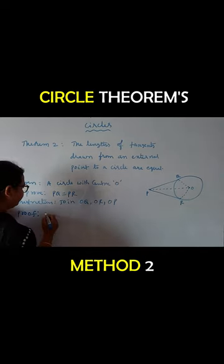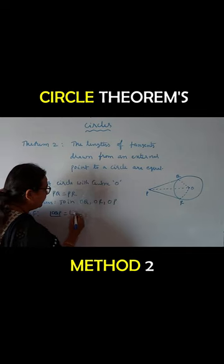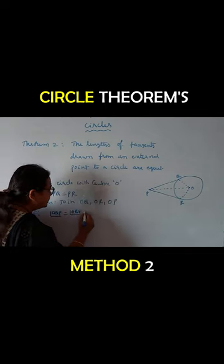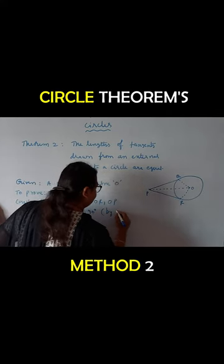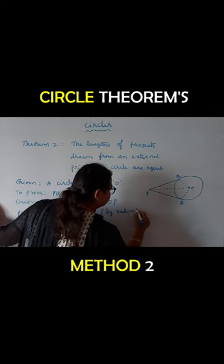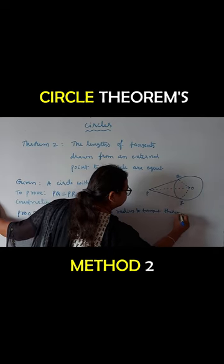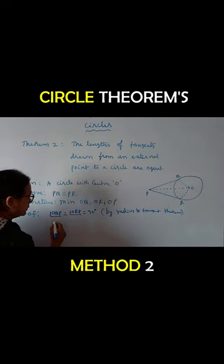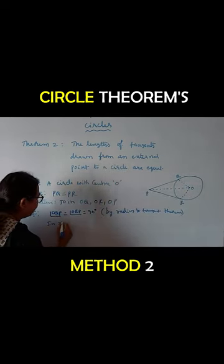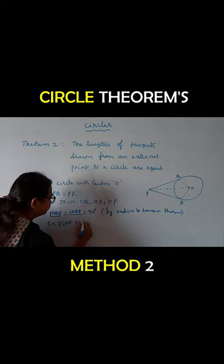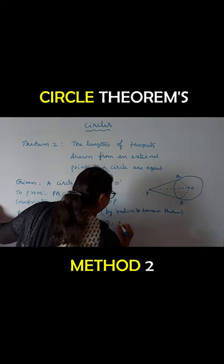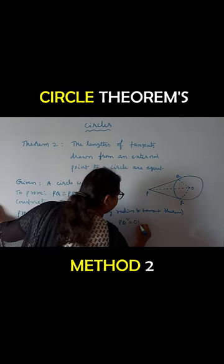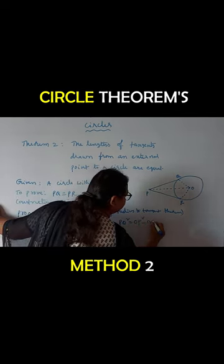Proof: Angle OQP is equal to angle ORP, which is equal to 90 degrees, by the radius to tangent theorem. So, in right triangle OPQ, PQ squared is equal to OP squared minus OQ squared.